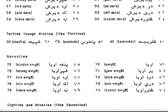40 through 60s are like 30s. So 40 would be Salwech, 50 would be Pinzos, and 60 would be Shpeta.